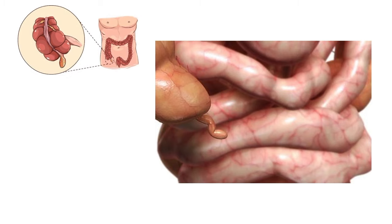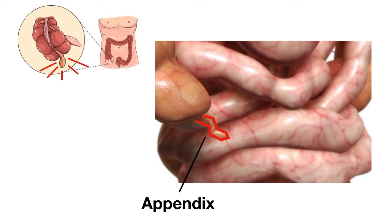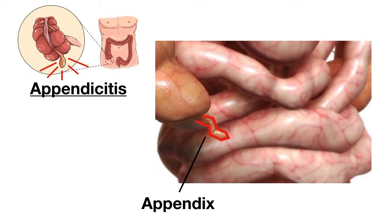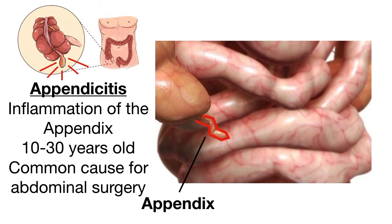Let's now take a closer look at the appendix. We can see that tubular worm-like structure coming off of the cecum where the small intestine and large intestine join. Unfortunately, the structure can become inflamed or infected, and this is known as appendicitis — inflammation of the appendix. Appendicitis can happen at any age, but it's more prevalent between the ages of 10 and 30, and it's one of the most common causes of abdominal surgery.